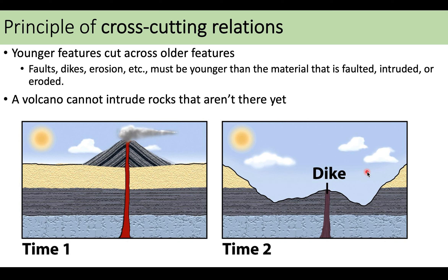Then we have the principle of cross-cutting relations, which is about intrusions — volcanic intrusions. Younger features cut across older features. This means if there is an intrusion, the thing that intruded is younger than what it intruded into. A volcano cannot intrude into rocks that aren't there yet, so any evidence of an intrusion — faults, dikes, sills, erosion — is going to be younger than the material intruded into. The thing that cuts through has to be younger than what it cuts through; otherwise, there would be nothing to cut through.